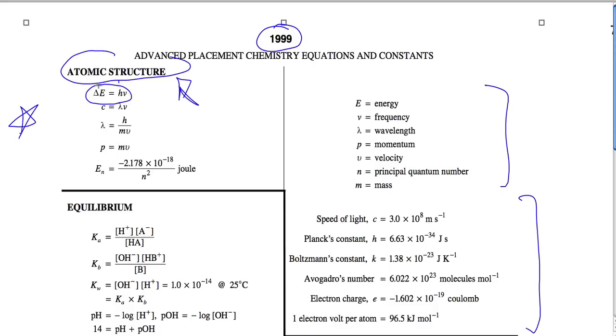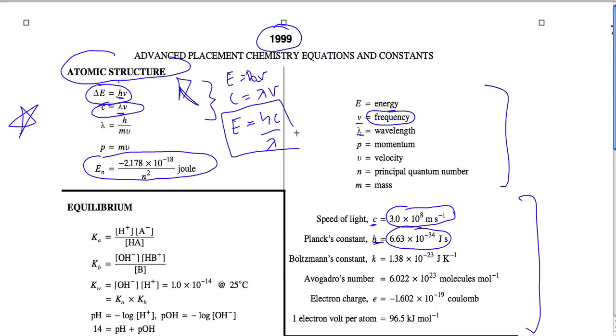Today we're going to be using the energy equation, the speed of light equation, and this other energy equation. The first energy equation relates Planck's constant h to the frequency ν. The second equation relates speed of light c to the wavelength lambda and the frequency. Notice there's a connection between the two. If E equals hν and c equals lambda ν, then E equals hc over lambda. So we're going to be using this equation. It's an important relationship between the two.